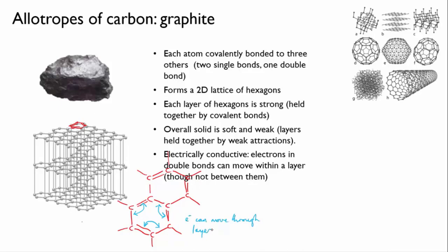This means that the extra electrons that form these alternating single and double bonds are essentially able to move through the 2D lattice, and that means that graphite is conductive.